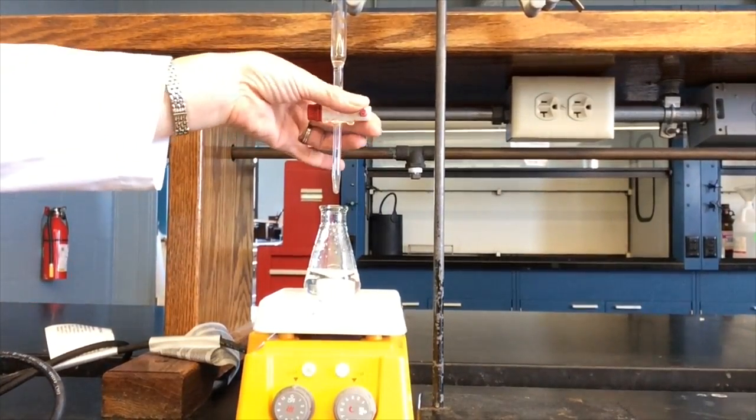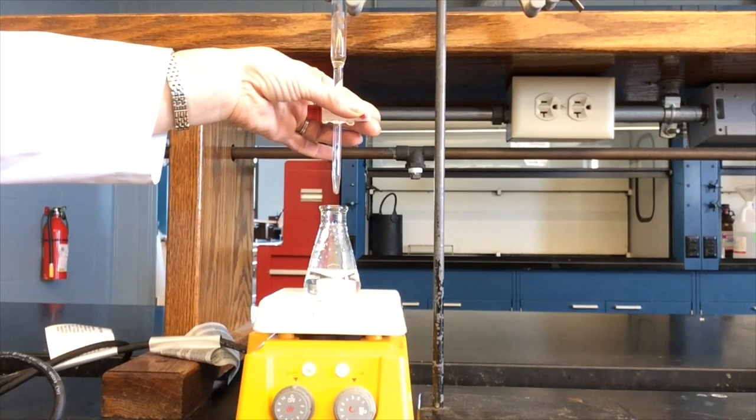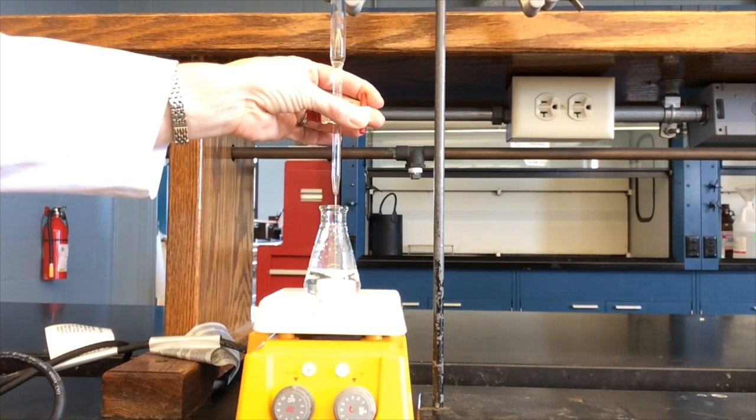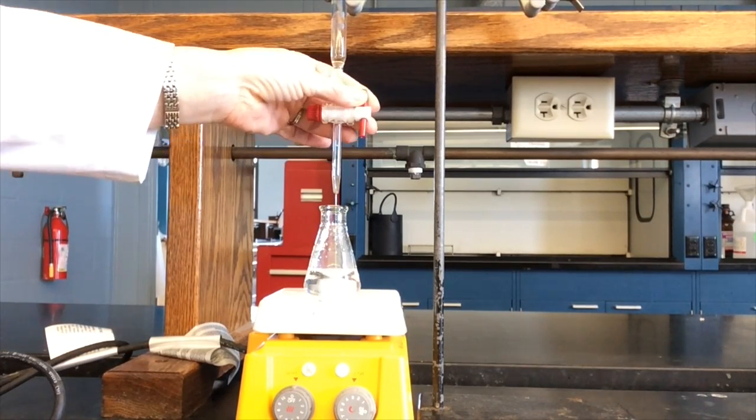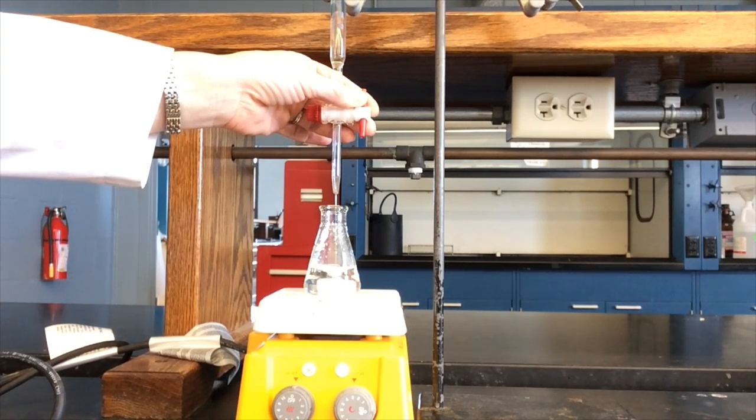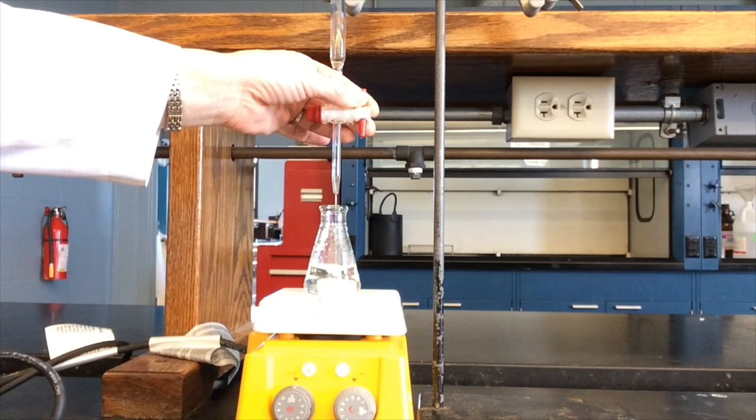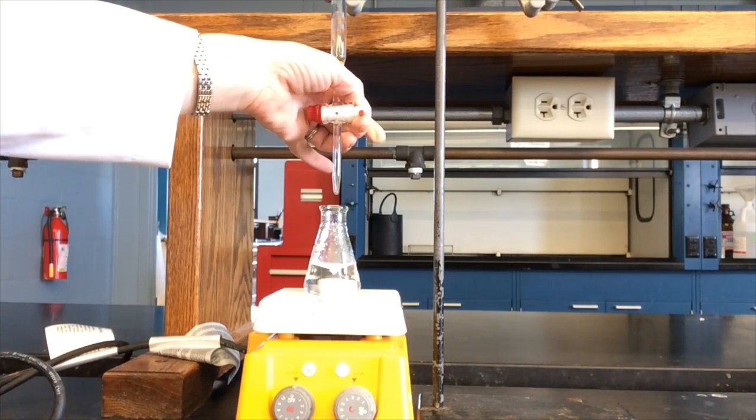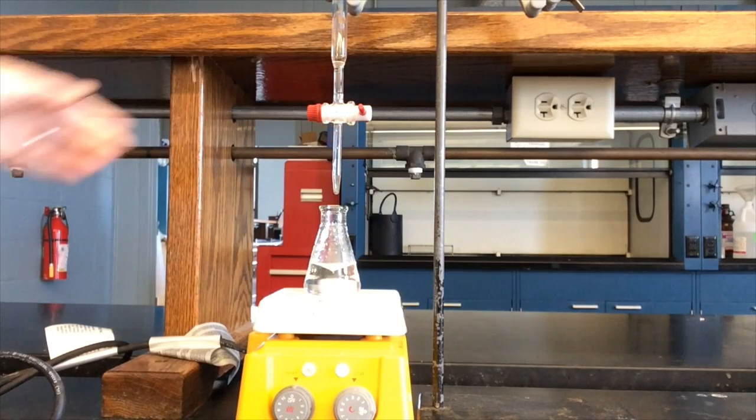Open the stopcock to start titrant flow into the Erlenmeyer flask. Here I am demonstrating the proper technique for titrating, which involves controlling the stopcock with your left hand, putting your thumb in front of the stopcock and your other fingers behind it. This hand position gives you the best control over the burette.